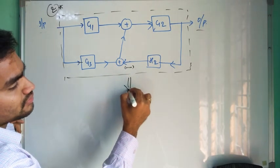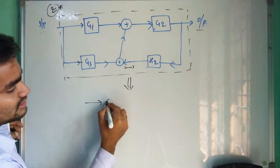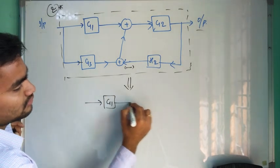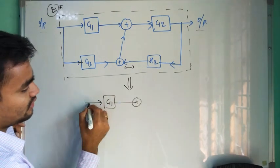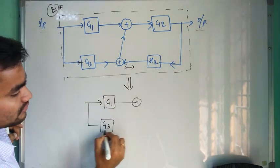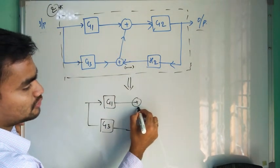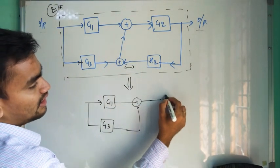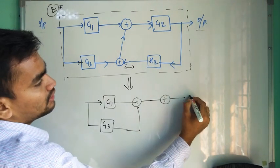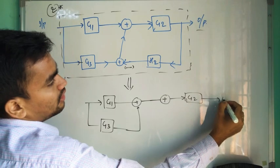I will elaborate this. We can write the block diagram like this: that is g1 with a summing point, and here another branch is coming, that is g3, and it is getting added to this, plus plus. So you can simply attach these two, and here another summing point and here g2, output.